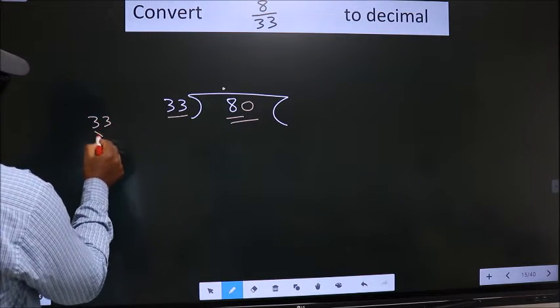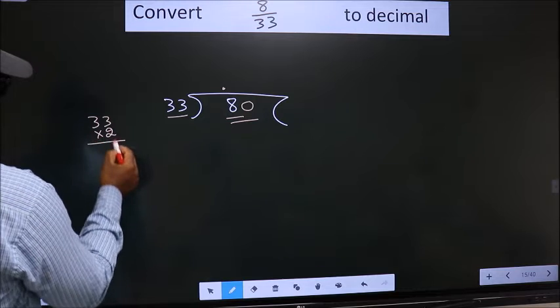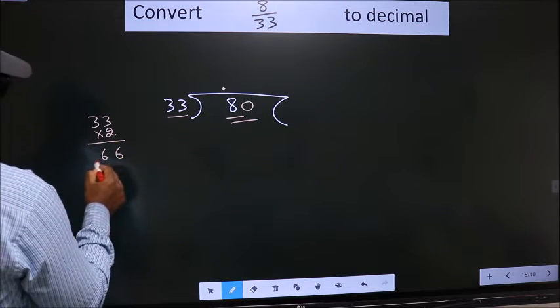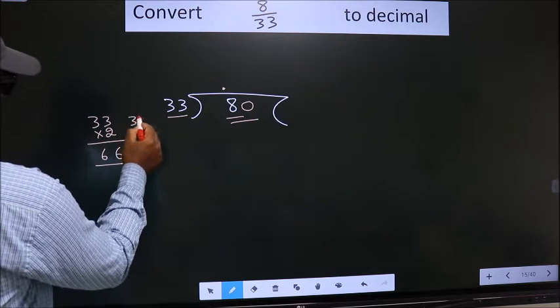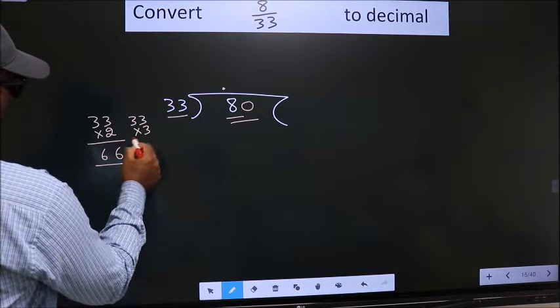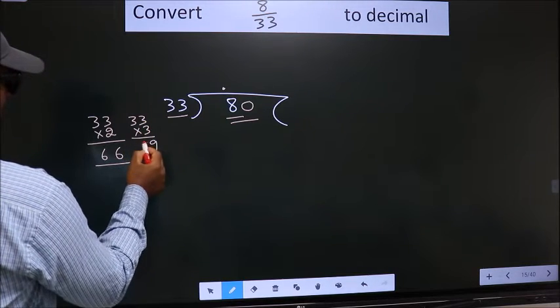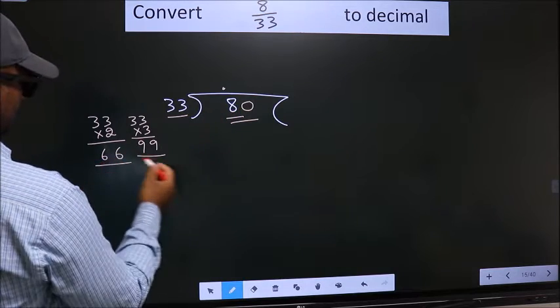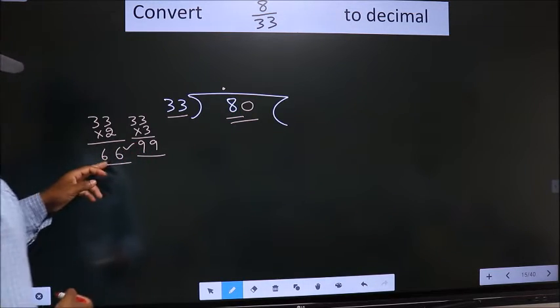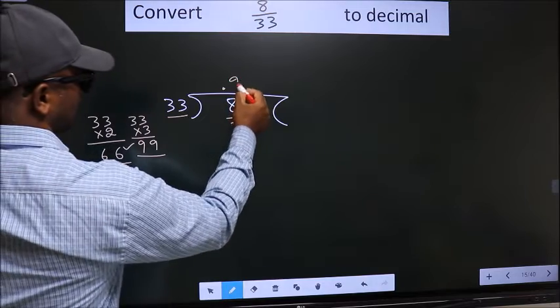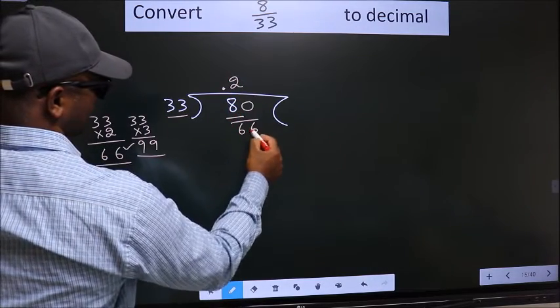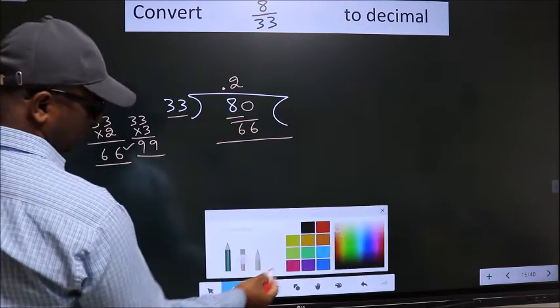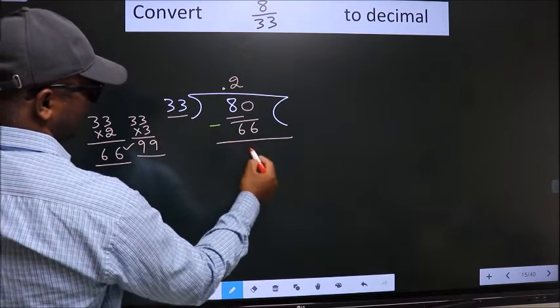So, 33 times 2: 2 times 3 is 6, 2 times 3 is 6. If we take 3: 3 times 3 is 9, 3 times 3 is 9. 99 exceeds 80, so we should go with 66. That is 2 times 33 equals 66. Now we subtract and get 14.